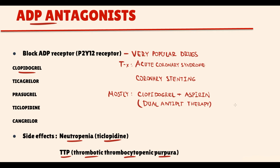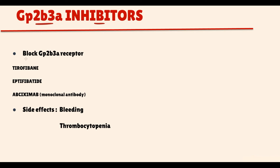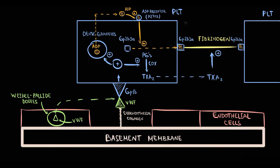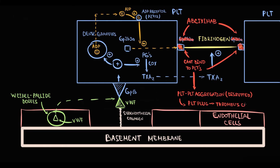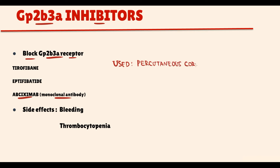The next class of drugs is called GP2B3A inhibitors. These drugs block the GP2B3A receptor on activated platelets. Let's take abciximab, which is a monoclonal antibody. Abciximab blocks the GP2B3A receptor that is already present on the platelet surface. As a result, fibrinogen cannot bind to platelets, so platelet aggregation becomes impossible, and thereby platelet plaque and subsequently thrombus cannot be formed. GP2B3A inhibitors are used in percutaneous coronary intervention and in patients with unstable angina. The most common side effects are bleeding and thrombocytopenia.